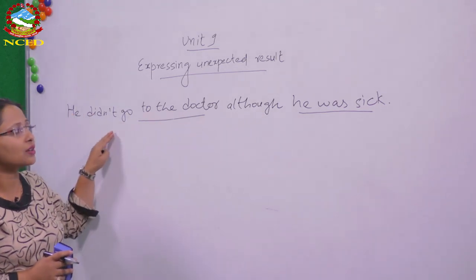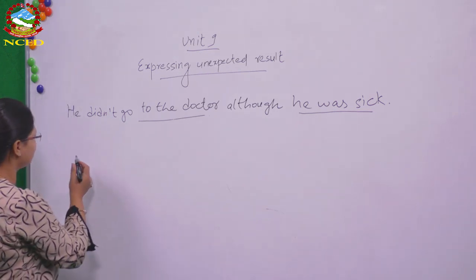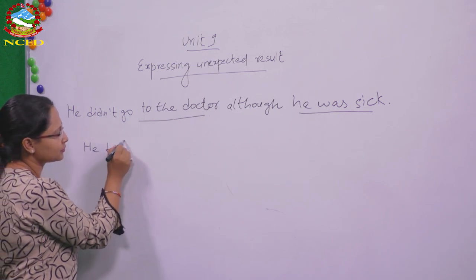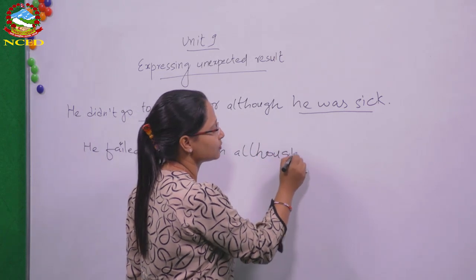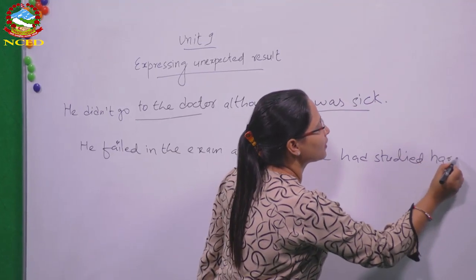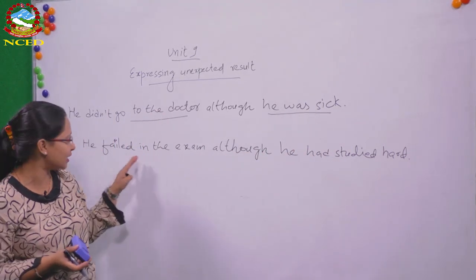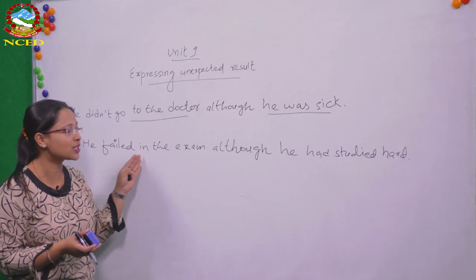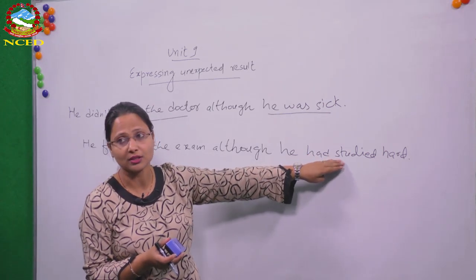He didn't go to the doctor although he was sick — this shows an unexpected result. Here's another common example: 'He failed in the exam although he had studied hard.' When somebody studies hard, the expected result is he passes the exam. But here he failed, although he had studied hard, so he should have passed but he didn't — this is an unexpected result.